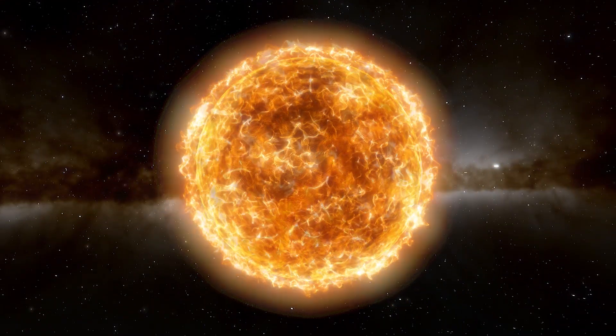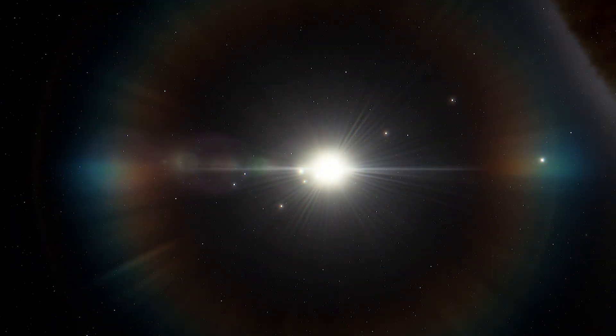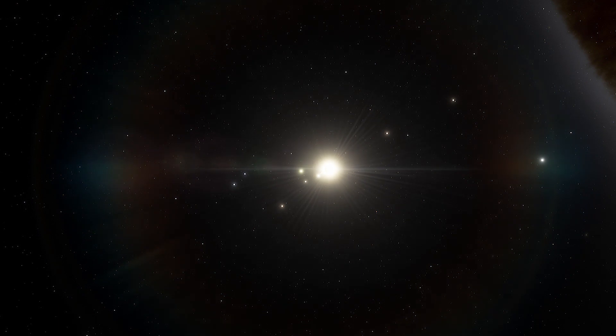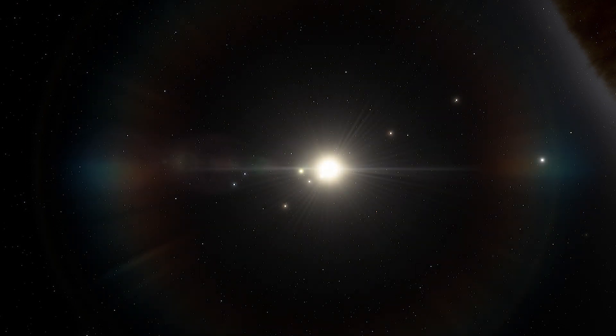These stars are also relatively easy targets for finding planets. That's because the light of such stars is slightly dimmer than the sun's, making planets more easily visible as they pass in front of their star.